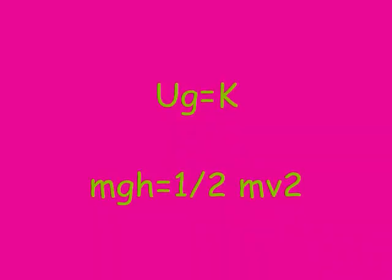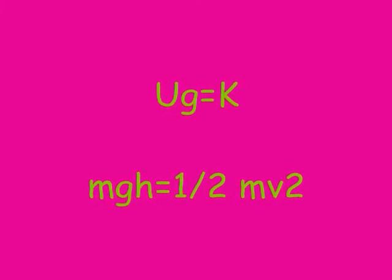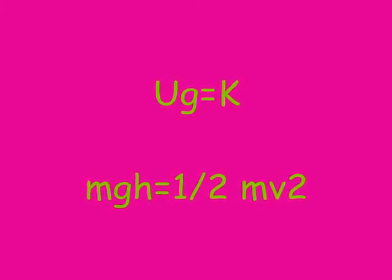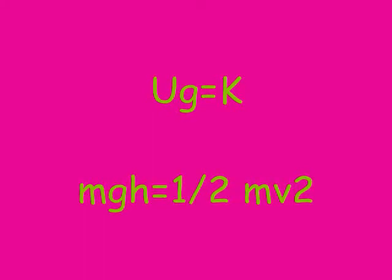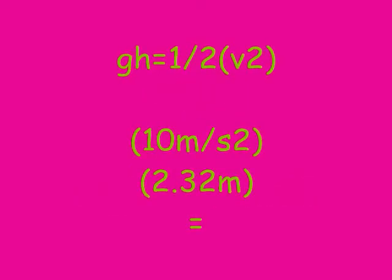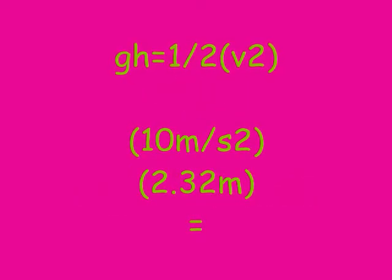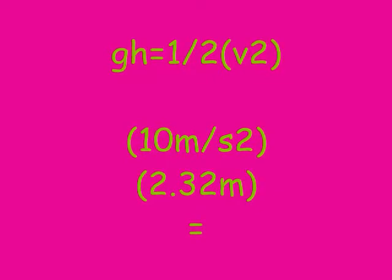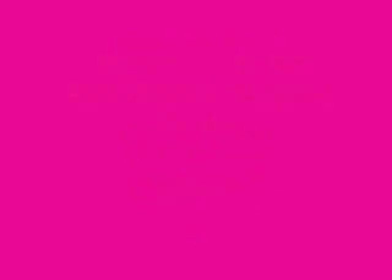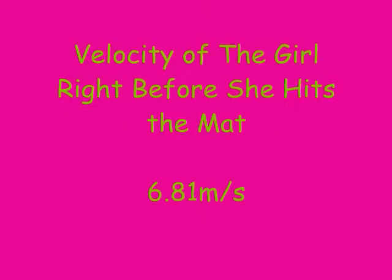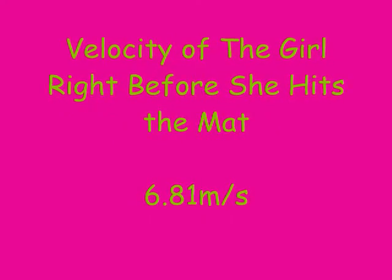We're going to say that the girl stopped right at the top above the pole, so she didn't have any speed — she just had potential energy. And at the bottom, before she hit the mat, we're going to say she didn't have any height, so she just had kinetic energy. We're going to set the equation up as mass times gravity times height equals one-half mv squared. The masses cancel out on each side, and after you solve it out, you'll find the velocity of the girl right before she hits the mat to be 6.81 meters per second.